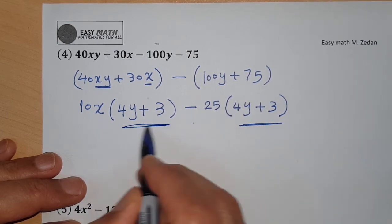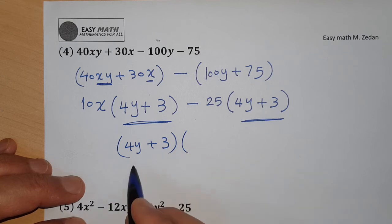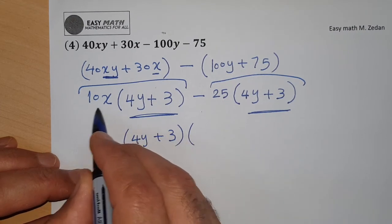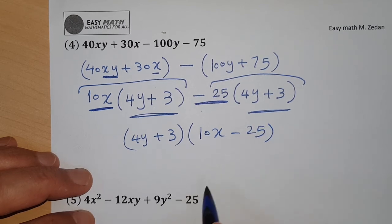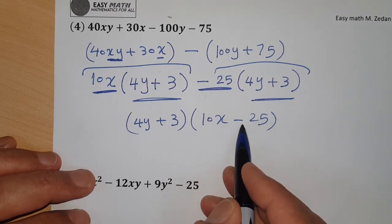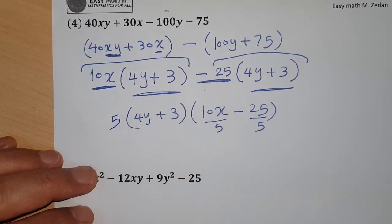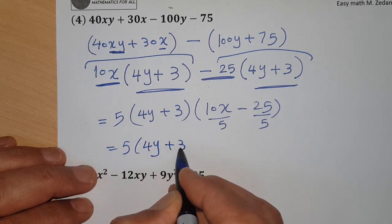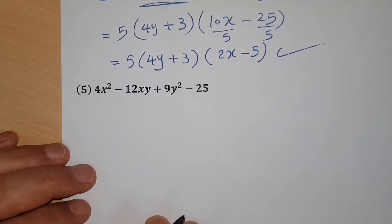The bracket (4y + 3) is the same in both groups. Take it outside as the common factor. The remaining outer terms are 10x minus 25. But 10x - 25 is divisible by 5, so factor out 5 to get 5(2x - 5). The final answer is 5(4y + 3)(2x - 5).